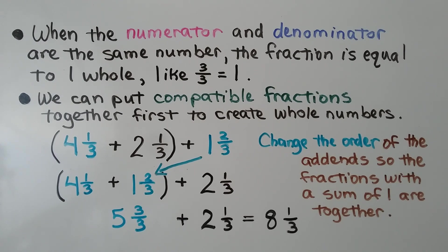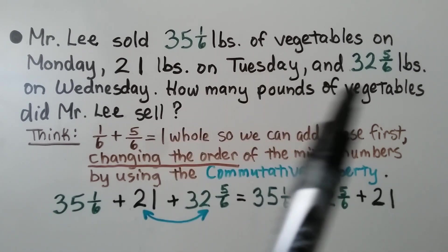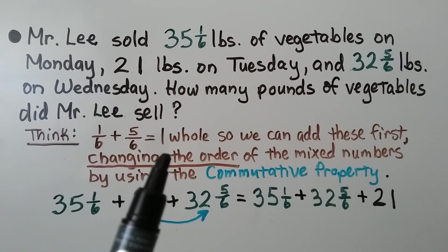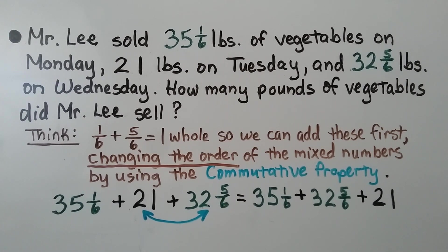We use the commutative property of addition to change the order and put together fractions that equal 1 whole. Mr. Lee sold 35 and 1 sixth pounds of vegetables on Monday, 21 pounds on Tuesday, and 32 and 5 sixths pounds on Wednesday. How many pounds of vegetables did Mr. Lee sell? We notice that 1 sixth plus 5 sixths equals 1 whole, so we can add those first by changing the order of the mixed numbers using the commutative property.